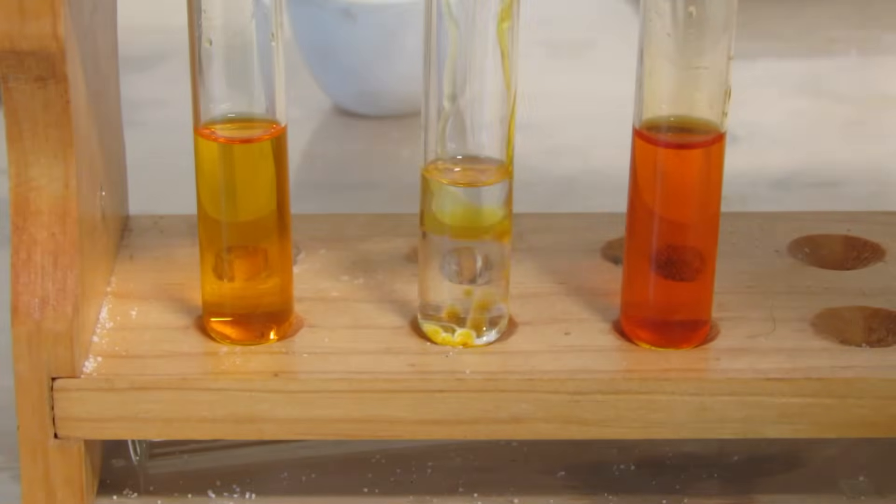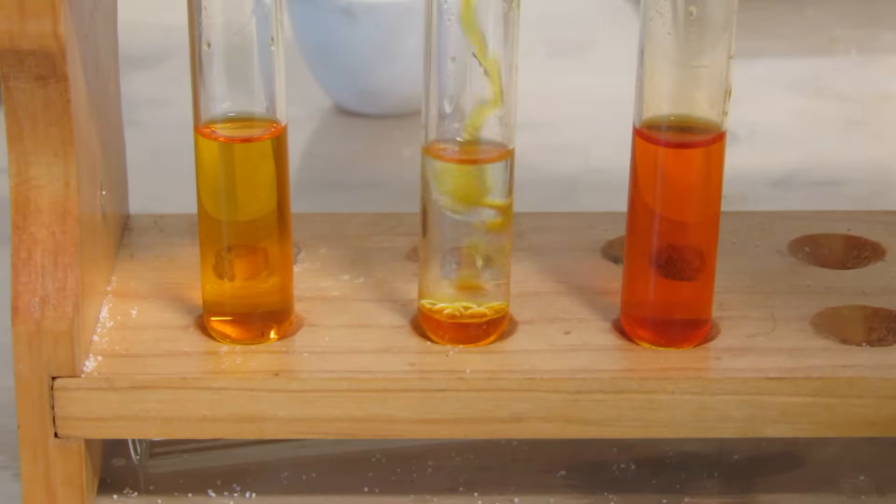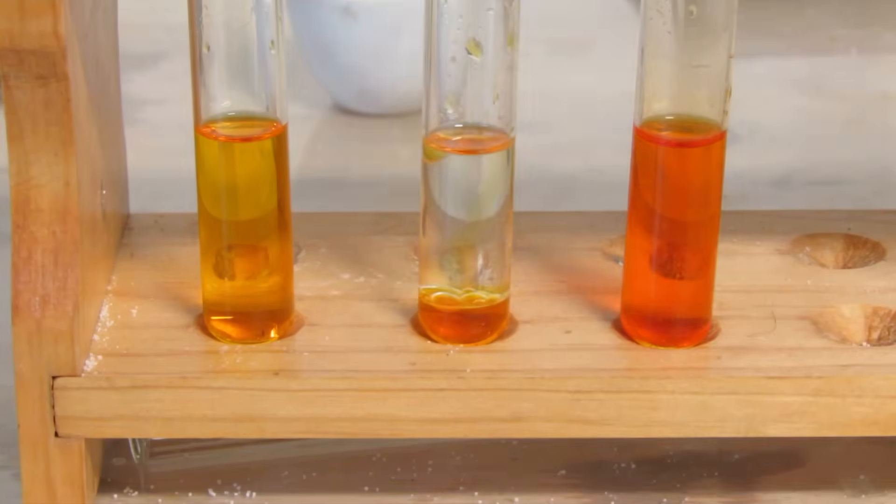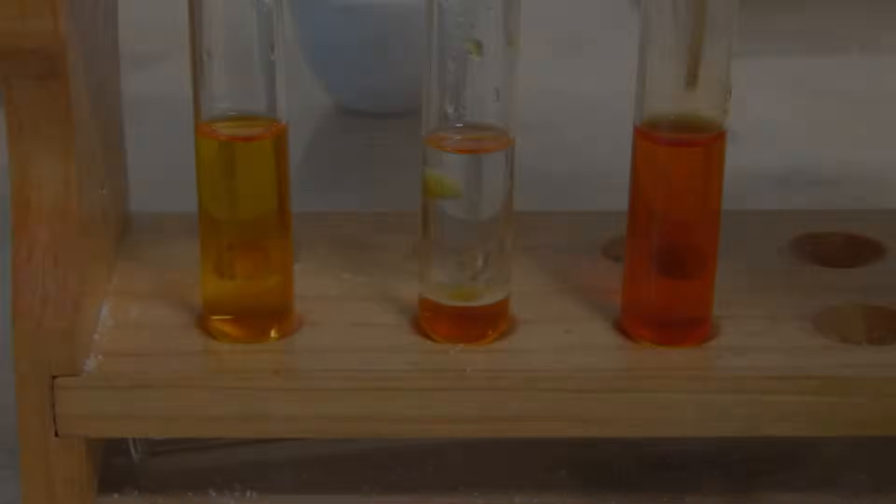Now let's do the same thing with the alkene molecule. You can notice that when we put in the bromine water, it forms two layers and doesn't dissolve like it did in the alkane molecule.